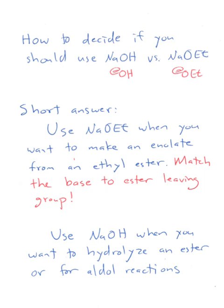The short answer is use sodium ethoxide when you want to make an enolate from an ethyl ester, but always match the base to the ester leaving group. Or use sodium hydroxide when you want to hydrolyze an ester or for aldol reactions.